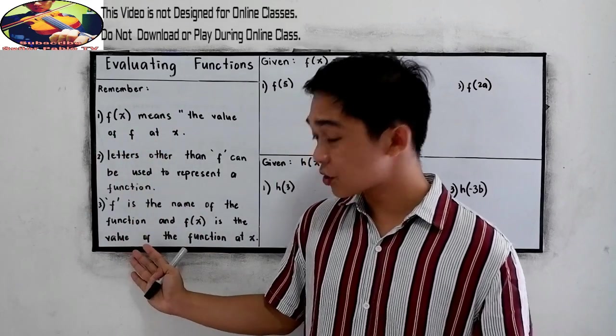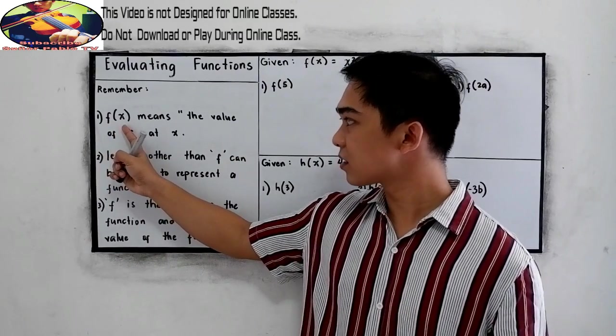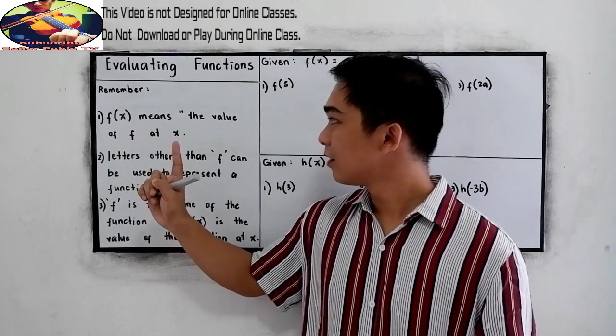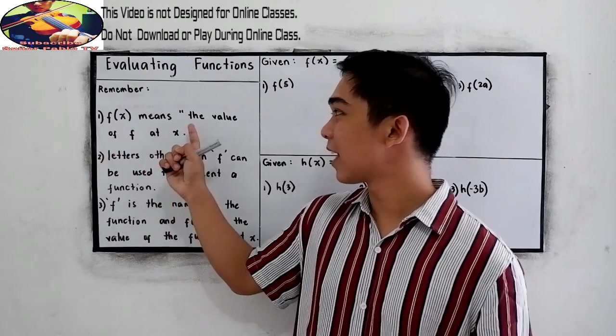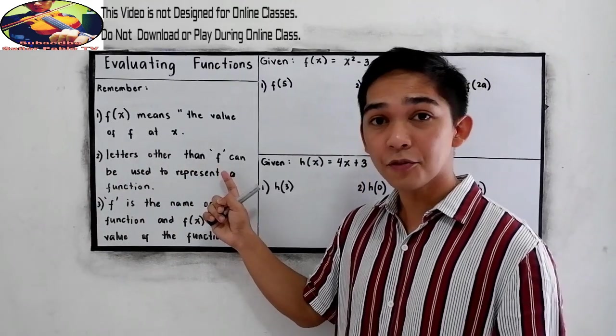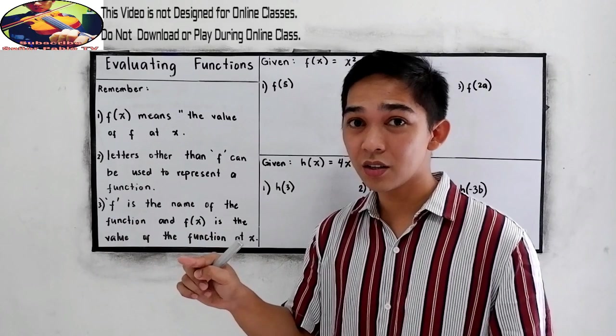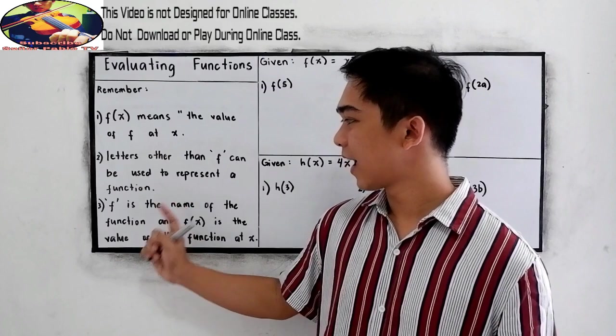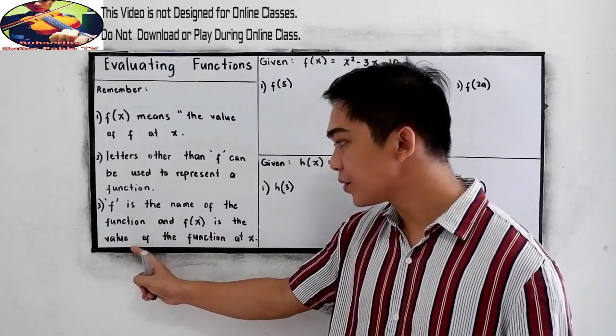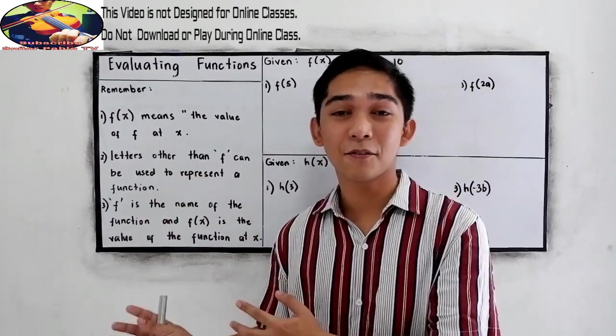These are the things you must remember when evaluating functions. Number one, f(x) means the value of f at x. That is not f times x, no. That is the value of f at x. Second, letters other than f can be used to represent a function. We can also use h, g, or even y to represent a function. And third, f is the name of the function, and f(x) is the value of the function at x. Now, to better understand, let's have some application.